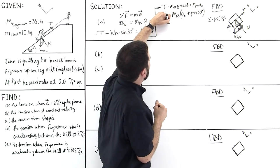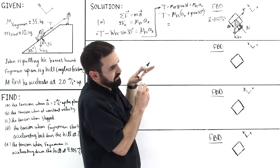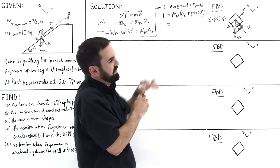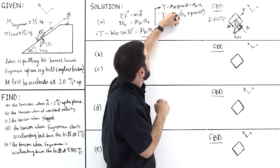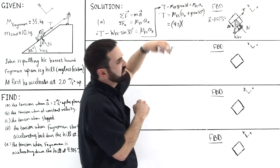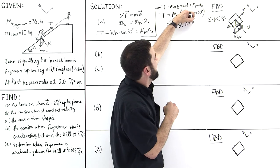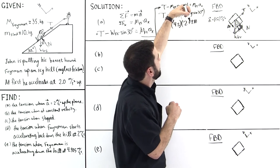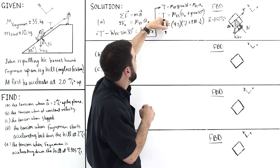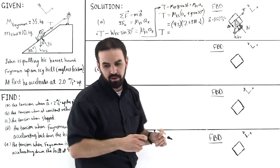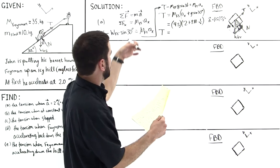Now we're ready to plug in numbers. The tension when the object is being pulled up the plane: M_FS is 45 kilograms, the acceleration in the x-direction is 2 meters per second squared, plus 9.81 times sine of 30. Sine of 30 is one-half, so we write one-half there. Calculating this out, we get 311 Newtons.